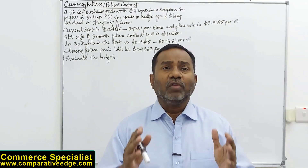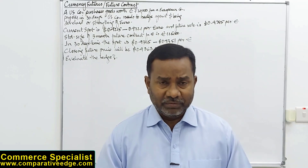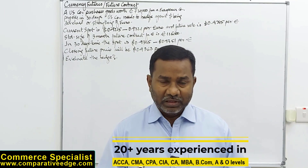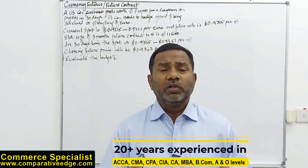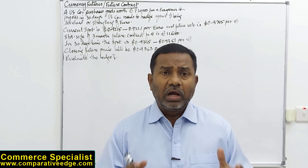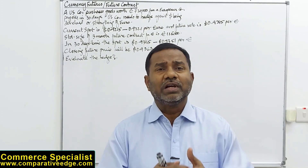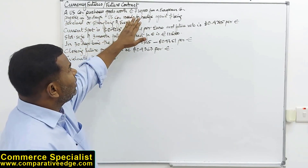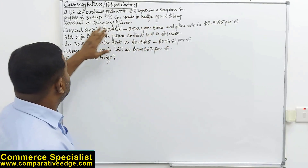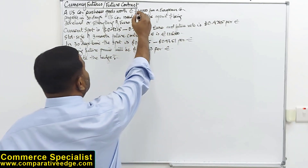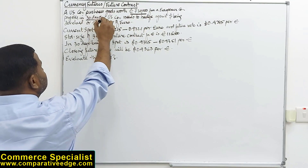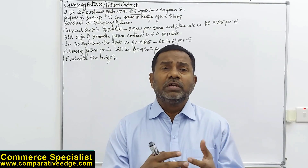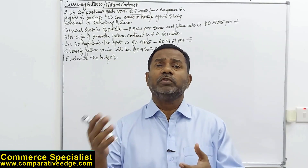In this video, I am going to discuss how to minimize the risk of adverse movement in foreign currency rates. One of the tools we are going to discuss is hedging — specifically, currency futures and how they are used to hedge against foreign currency payments. Here is an example: a US company purchases goods worth 720,000 euros from a European company, payable in 30 days. The concern is that by the time they have to pay in euros, what if the euro appreciates against the dollar?